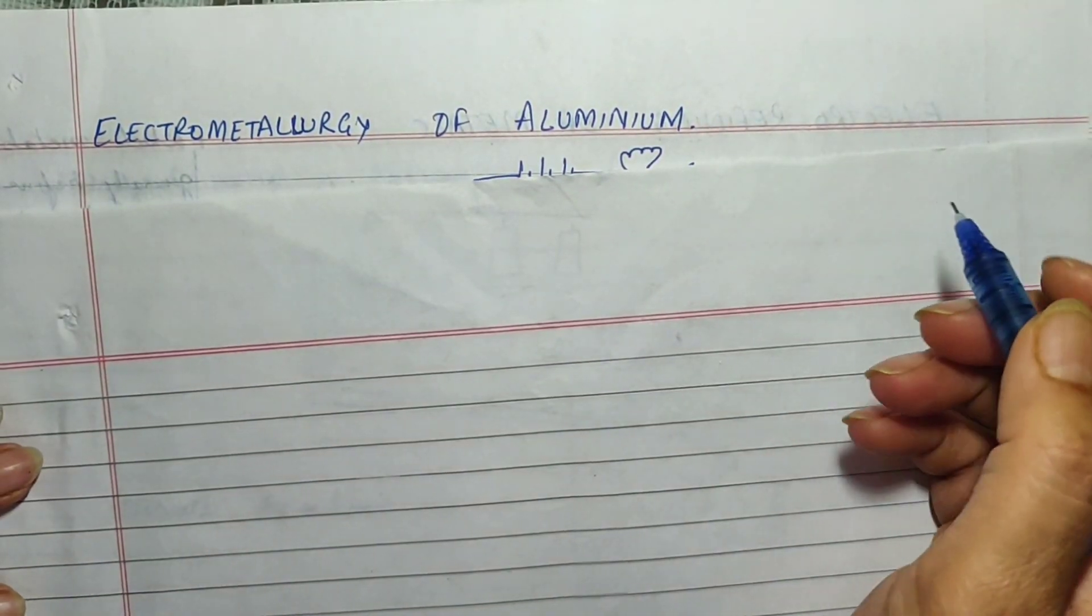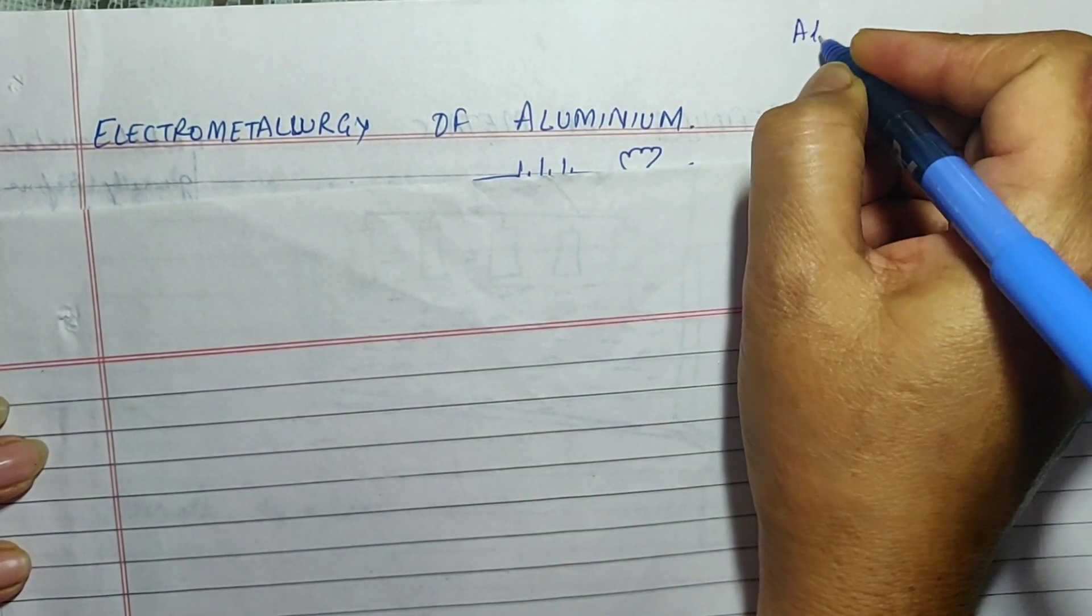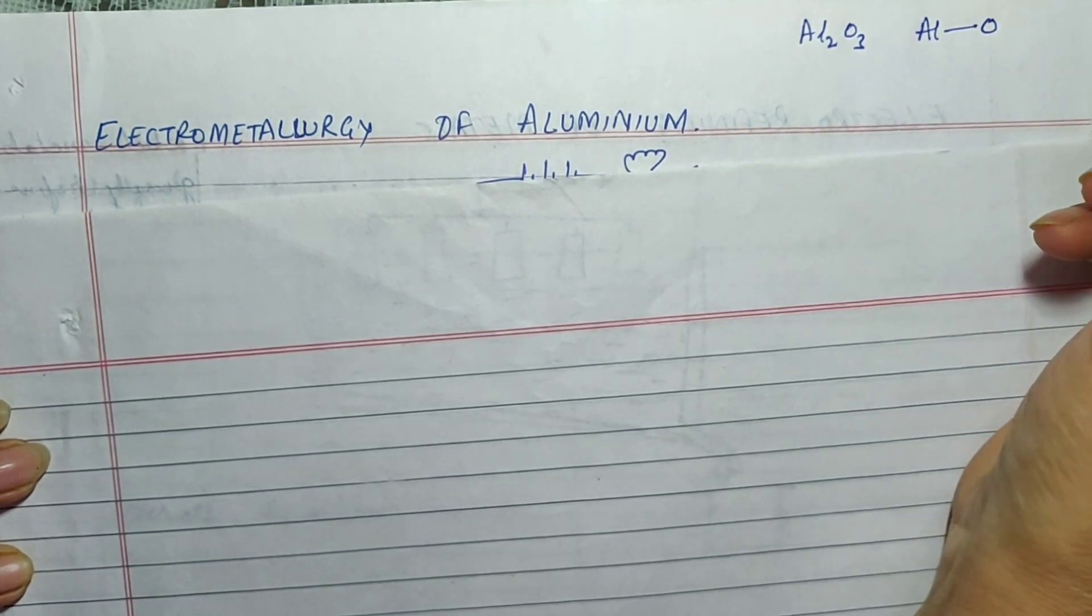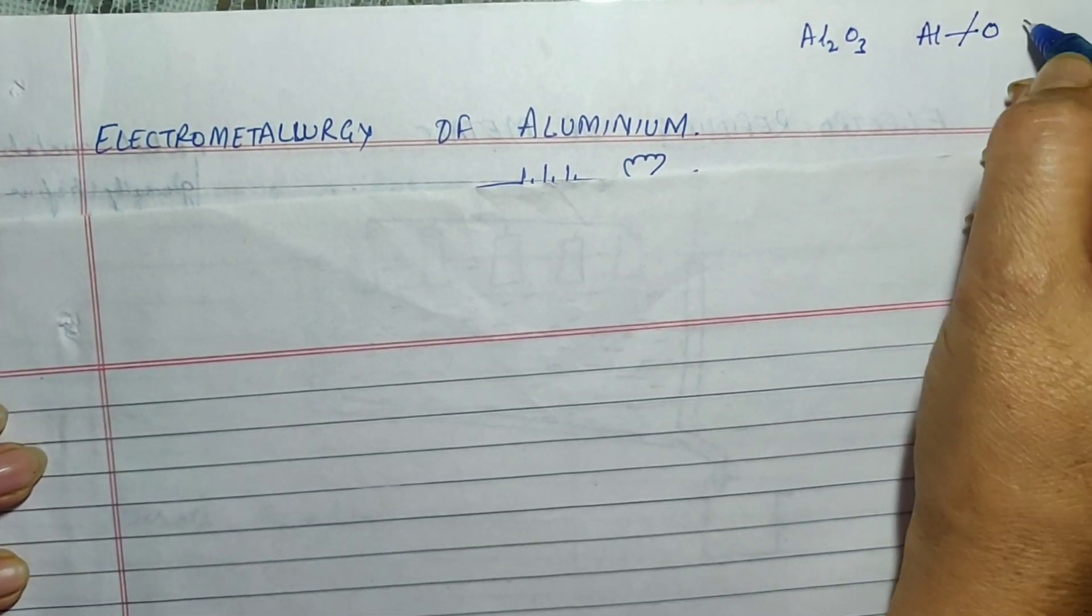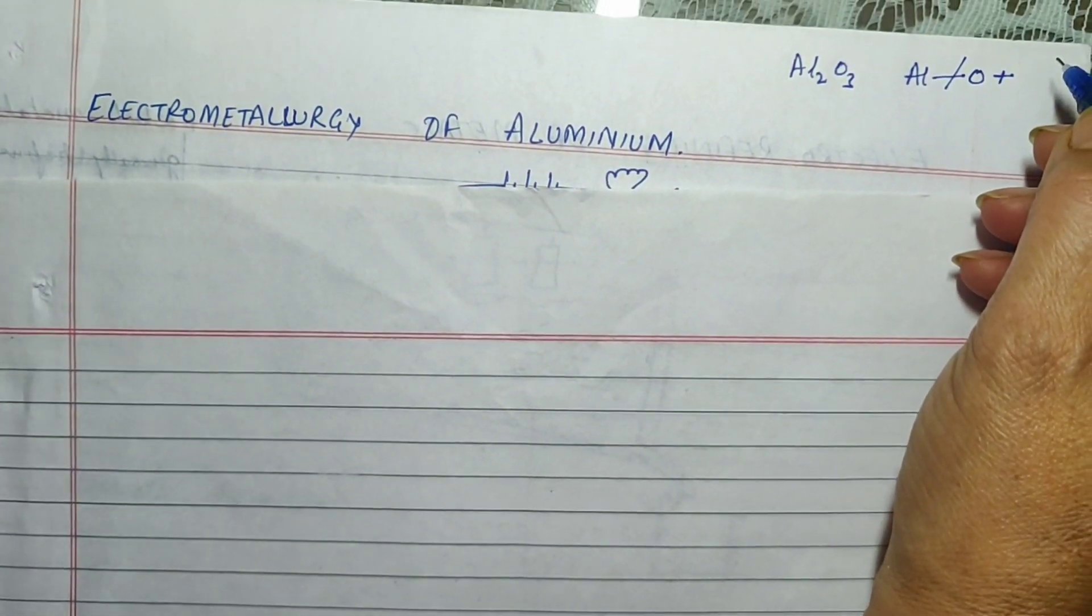We are going to take an example of aluminium, electrometallurgy of aluminium. Actually aluminium exists in the form of Al2O3 but the bond between aluminium and oxygen is so strong that it cannot be broken down by the conventional reducing agents. So that is why we have to resort to electrometallurgy.